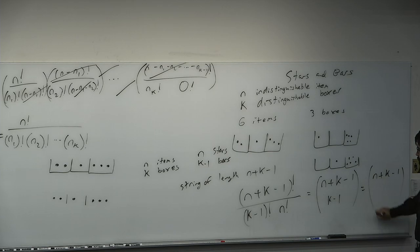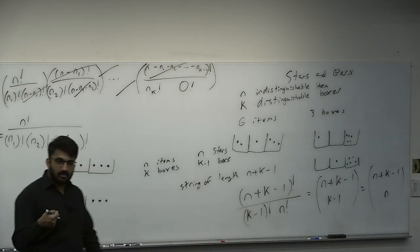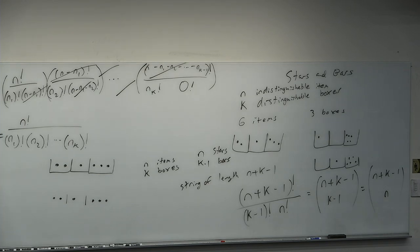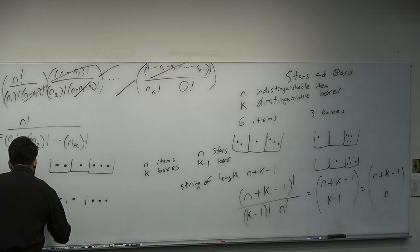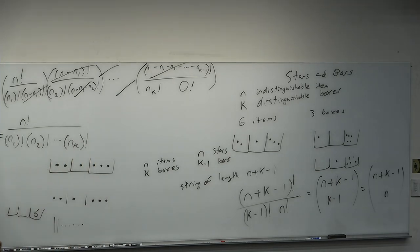We proved n choose k equals n choose n minus k. Combinatorially, choosing k items is the same as not choosing n minus k items — like when you're picking a dodgeball team, picking three people is the same number of ways as not picking the other seven. Here, choosing spots for the k minus one bars is exactly choosing spots for the n stars. The arithmetic proof: n choose k is n factorial over k factorial times n minus k factorial, and n choose n minus k simplifies to the same thing. Rather than memorize a formula, it's more important you know how to apply it — if you know the proof, you never have to memorize.